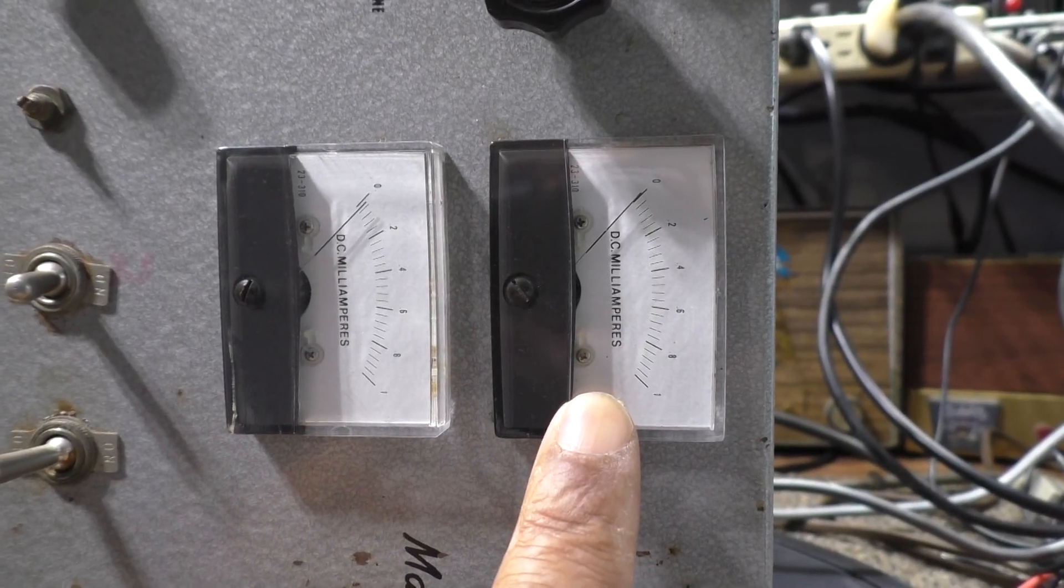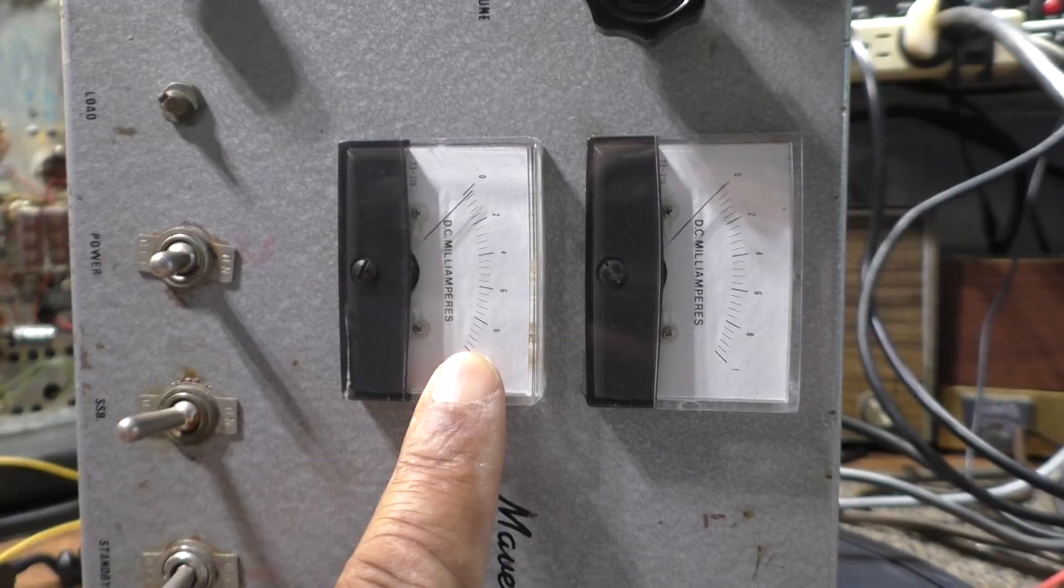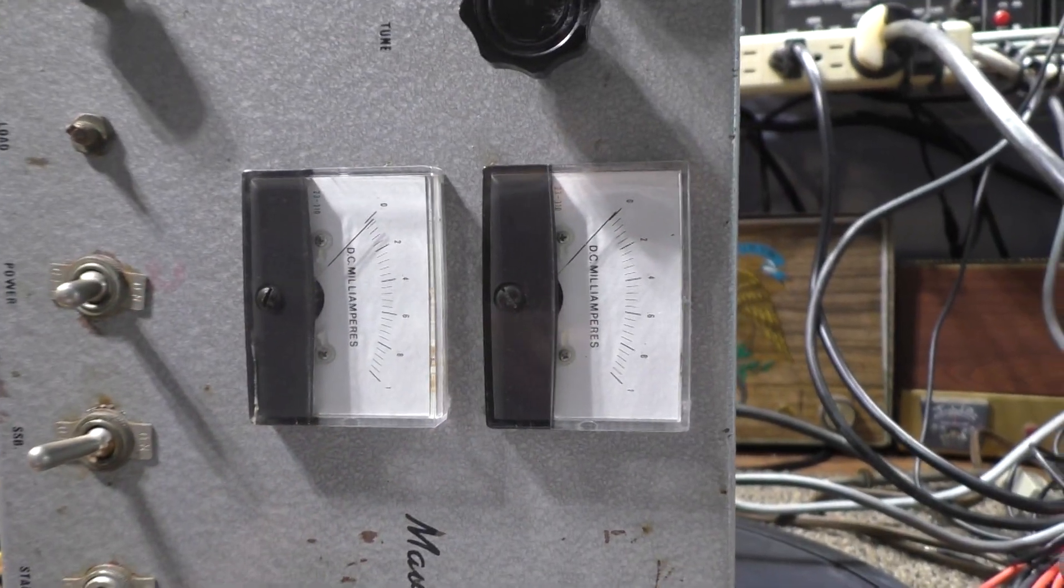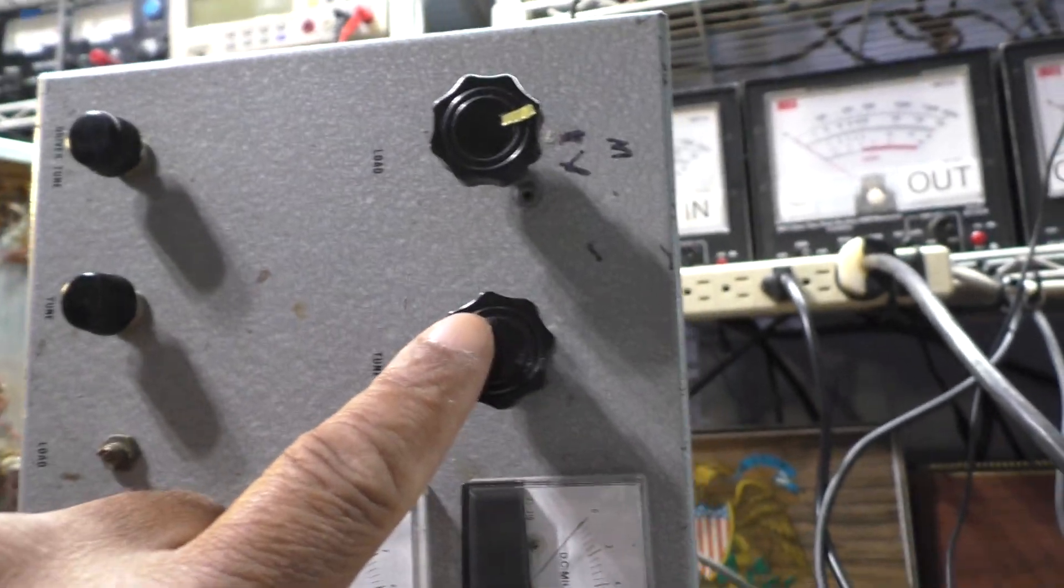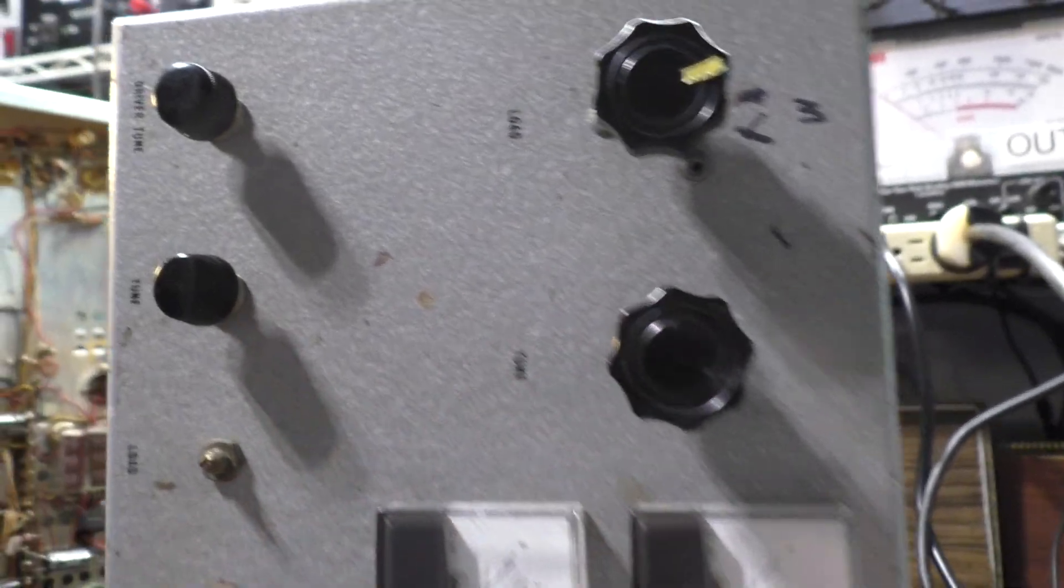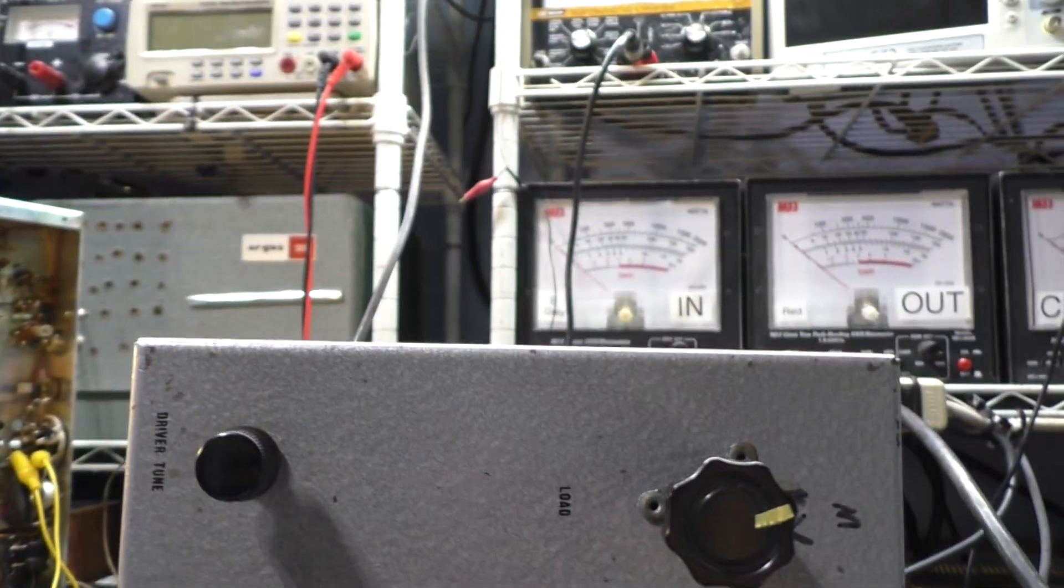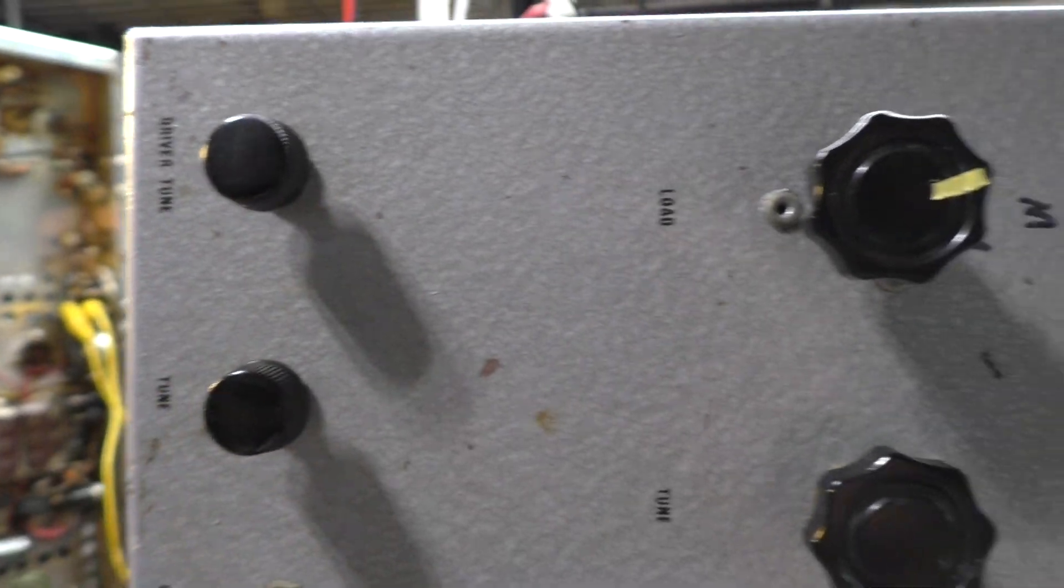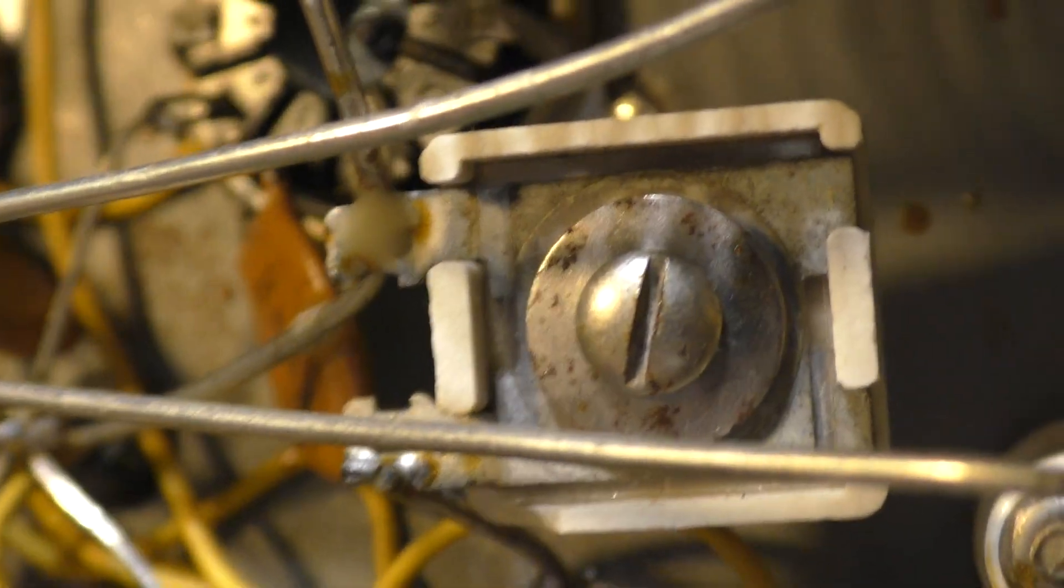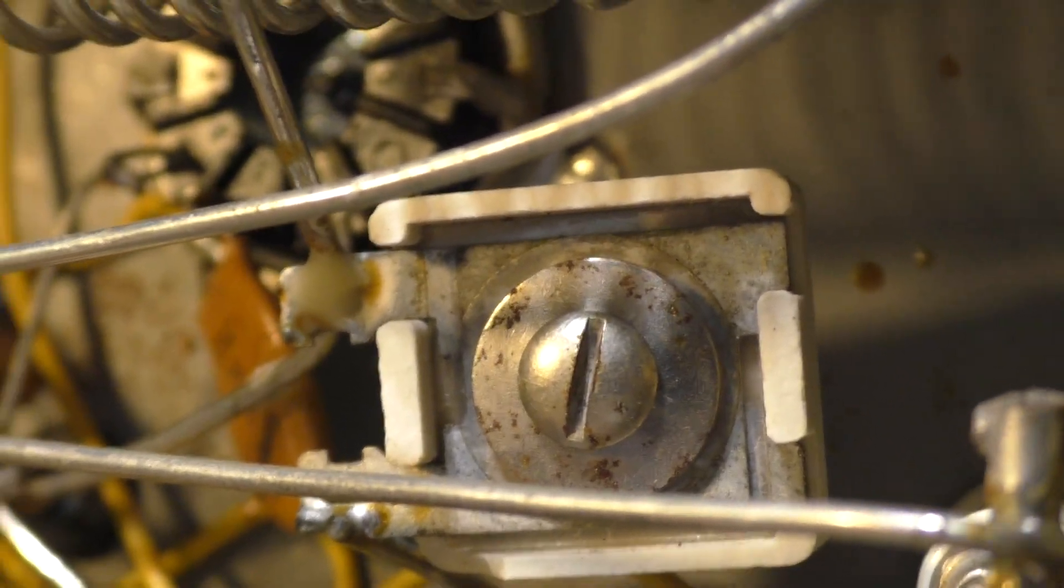Also on this one, and I think most of the other ones - again they had so many different configurations - this meter goes to the high side, tells you what the high side is doing, and this meter tells you what the driver tubes are doing. Tuning low for your output is only in effect on the high side.